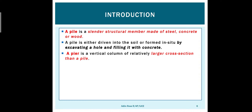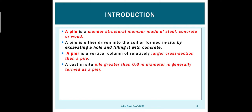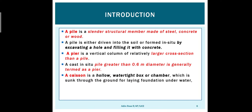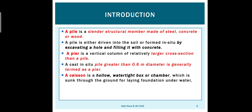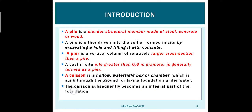Pier is another type of deep foundation. It is the same as a vertical column but the cross section is larger than the pile — usually larger in diameter. Pier is mostly used under bridges. Then we have caissons, which are like well foundations. They are of very large diameter and are used for underwater structures like offshore platforms.